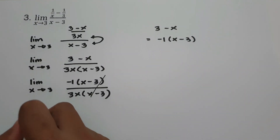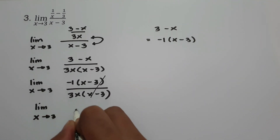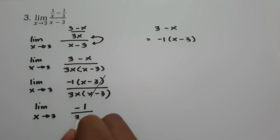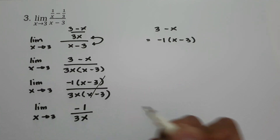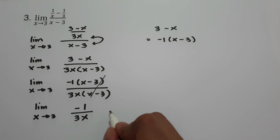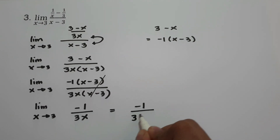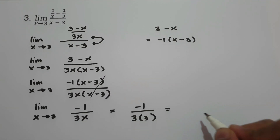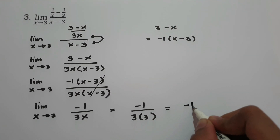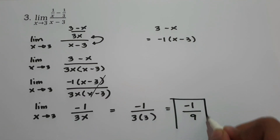And we have the limit as x approaches 3, that is negative 1 over 3x. So this time, let us substitute the value of x, which is 3. That is negative 1 over 3 times 3. To simplify, negative 1 over 3 times 3 is 9. And this would be our answer: negative 1 over 9.